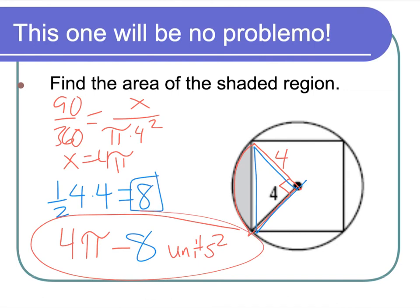So what I have is 4π minus 8 units squared. Cool. I like it. Another way I've seen people do this is they find the area of the entire circle, then subtract out the square, and then divide that by 4 because you're only finding one of those four. So, again, there are a few ways of doing this, but it is up to you to make that decision as to what you think might be easiest for you.